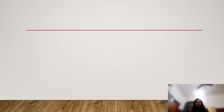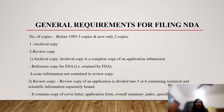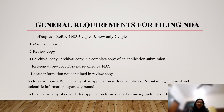The general requirements for filing an NDA specify the number of copies required. Before 1985, three copies were required; now only two copies are sufficient — an archival copy and a review copy. The archival copy is a complete copy of the application submission, serving as a reference copy retained by the FDA, and includes information not contained in the review copy. The review copy is divided into five or six sections containing technical and scientific information separately bound, and includes a cover letter, application form, overall summary, index, and specific review sections.